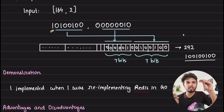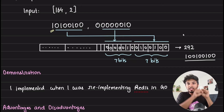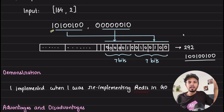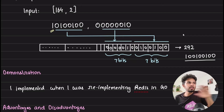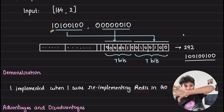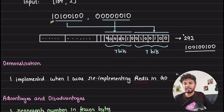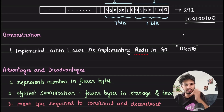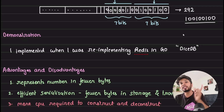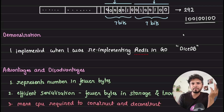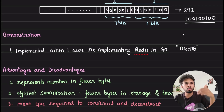This is not a replacement for your standard integer — this is used when you serialize and deserialize a value. When transmitting 292 over the network, instead of sending 4 bytes you send 2 bytes, gaining bandwidth efficiency. Instead of storing 4 bytes on disk, you store 2 bytes. That's where the magic happens. Now let's take a look at the source code to understand how it is exactly implemented — this is from my Redis reimplementation in Go, which I named DiceDB.